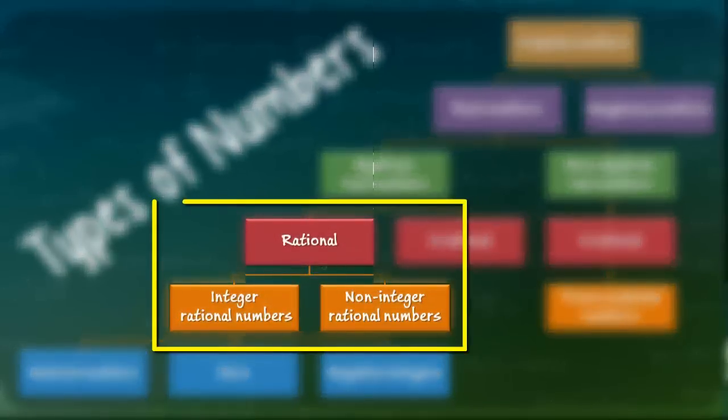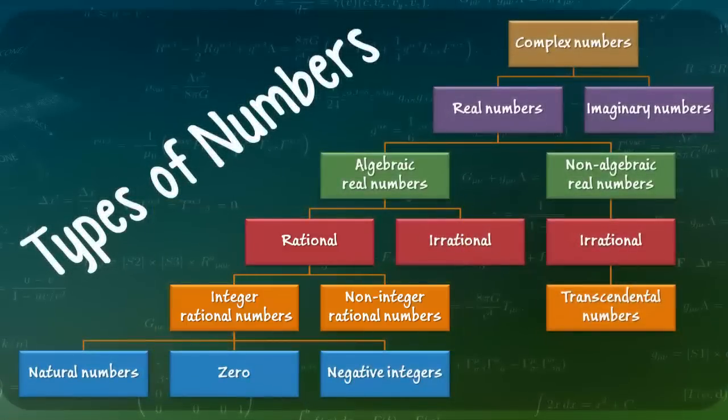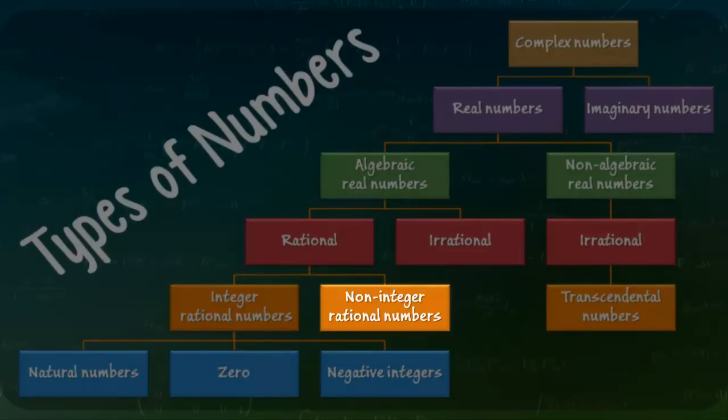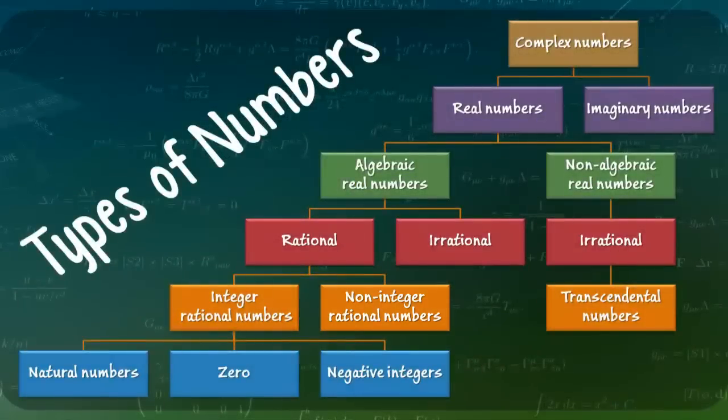As you can see, integers comprise one of the two different types of rational numbers. Before exploring the other variety of rational number, that is, the non-integer rational numbers, let's take a moment to learn about rational numbers in general.